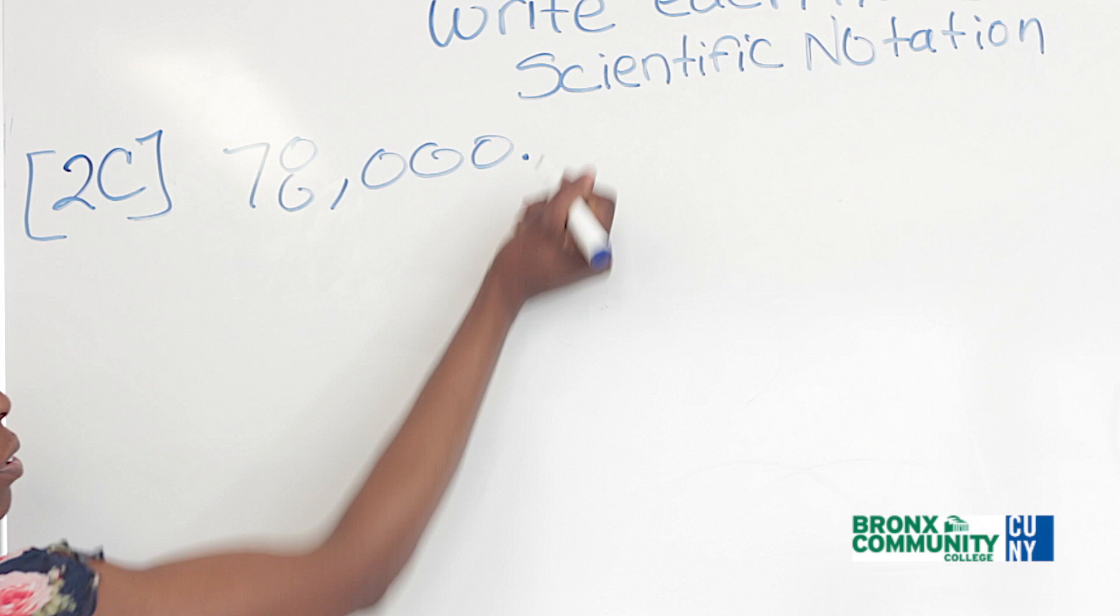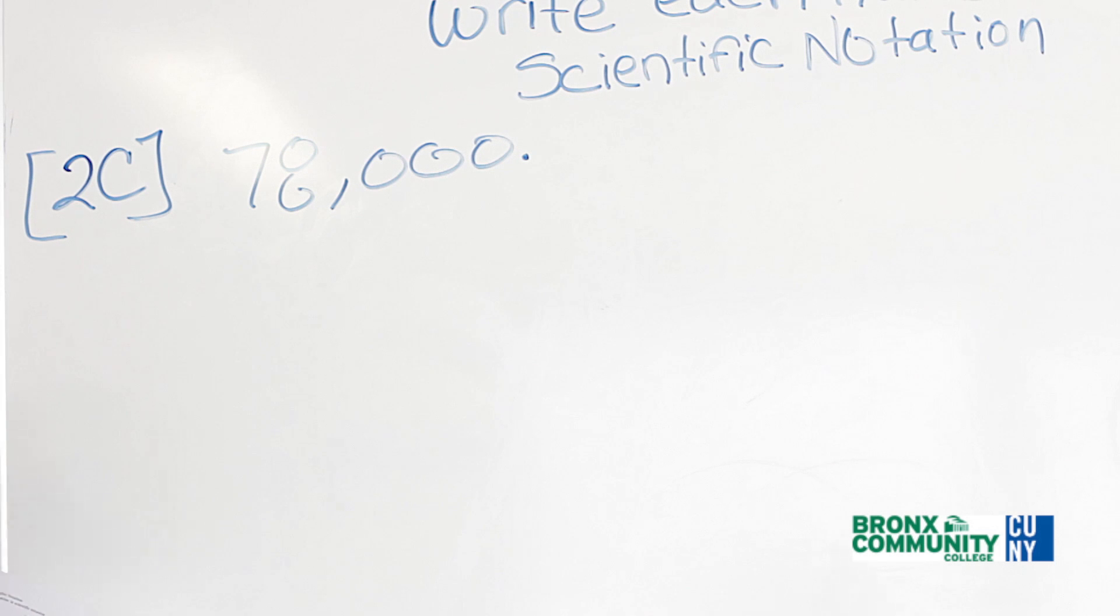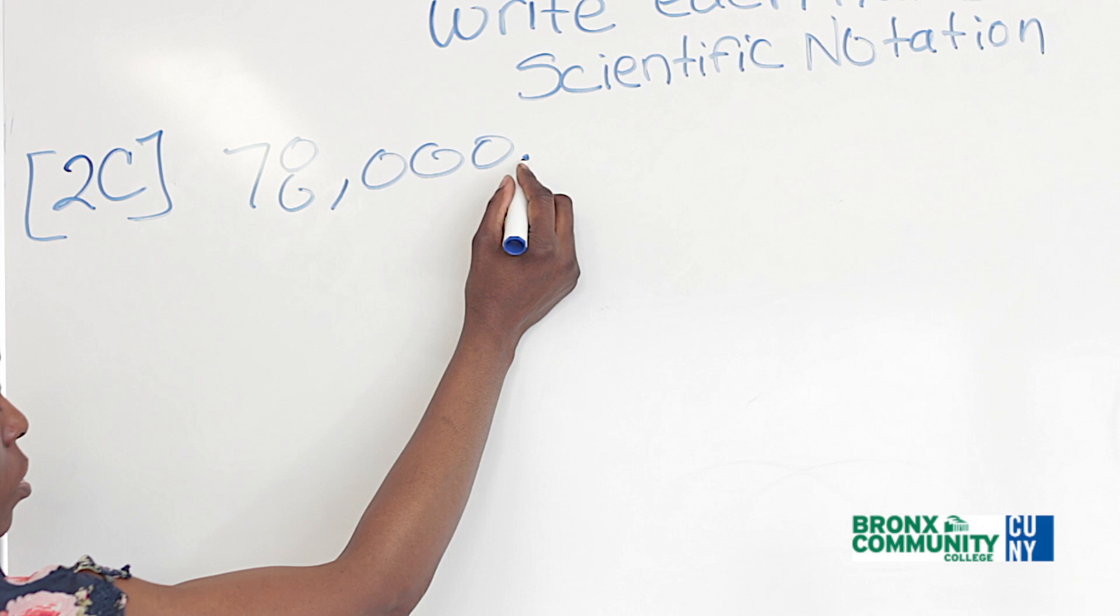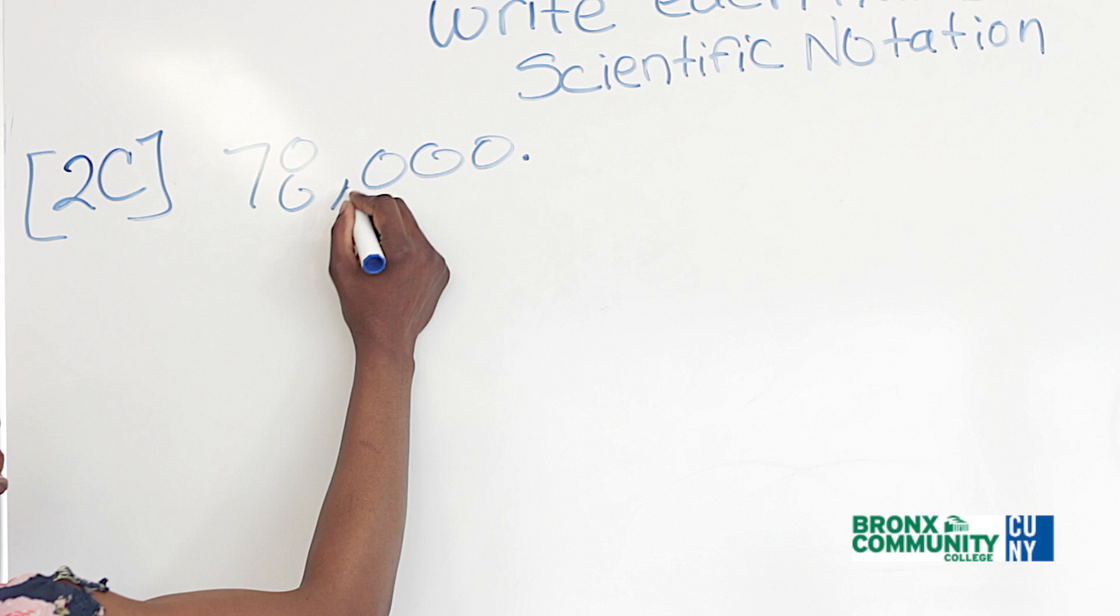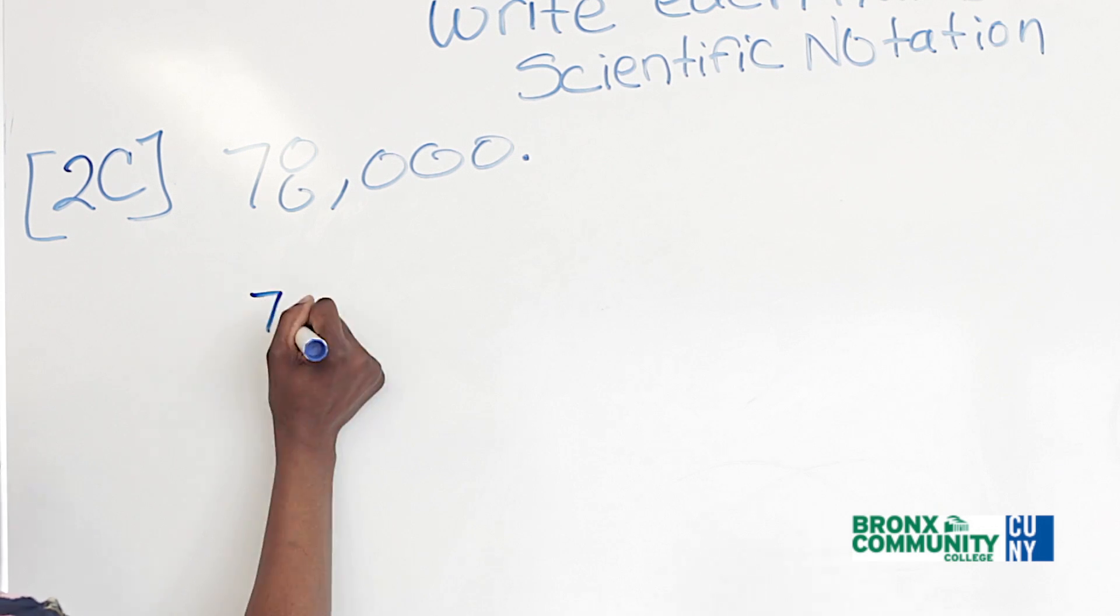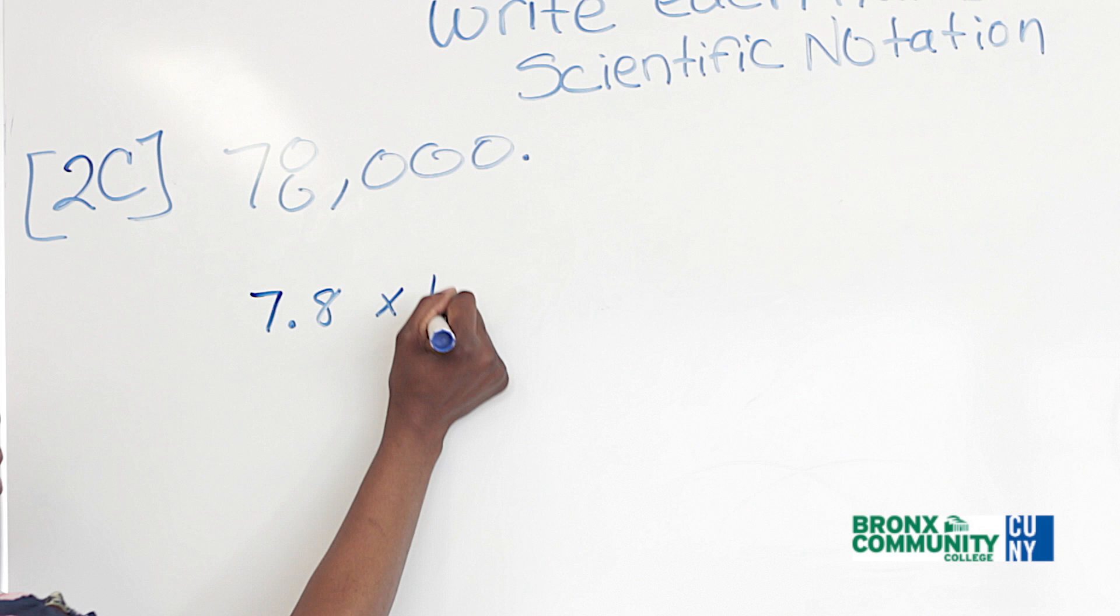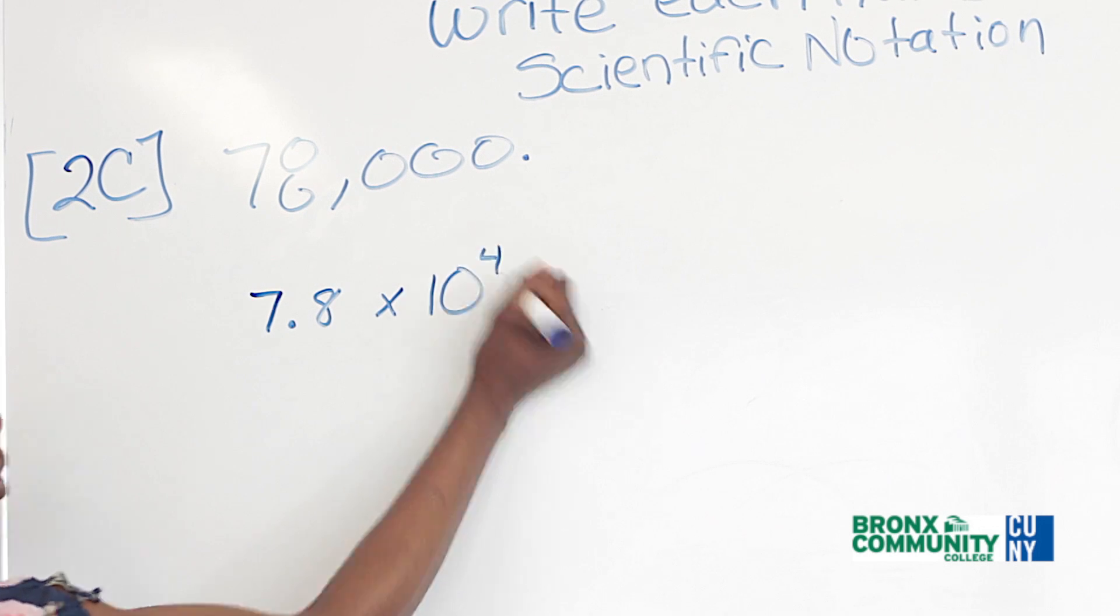The decimal is here. Oh yeah, that's right. That's 78,000. So we have to move it a bunch of places: 1, 2, 3, 4 places. So you write that 7.8 times 10 to the 4th.